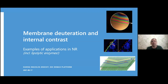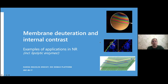Even though Tommy promised you lipolytic enzymes in the title, I would like to concentrate mainly on membrane deuteration and the creation of internal contrast, with a few examples including some enzymes, of how this is used in neutron reflectometry. I particularly would like to impress you with the ability of deuteration to allow us to see inside even single lipid bilayers—in a way that's quite different to what Tony would have just told you about.